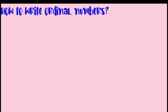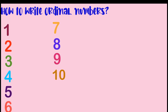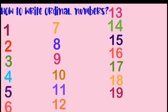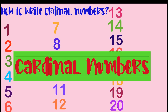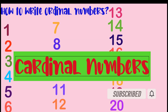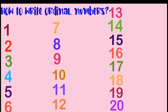How do we write ordinal numbers? Before that, let us write these numbers first. These numbers are what we call cardinal numbers. When you say cardinal numbers, it gives us the exact quantity of an object. It answers the question: how many? That is cardinal numbers. So, let's start how to write ordinal numbers.